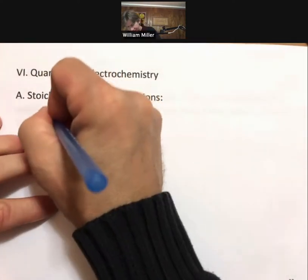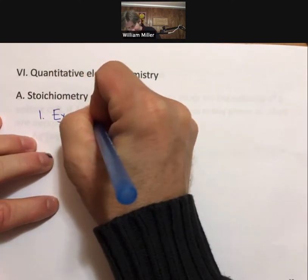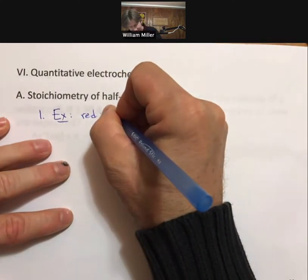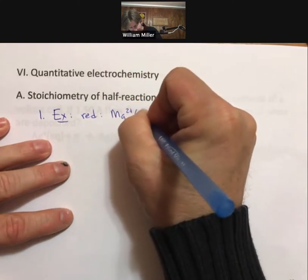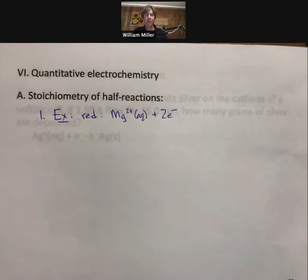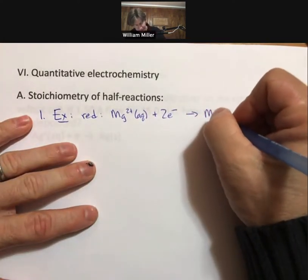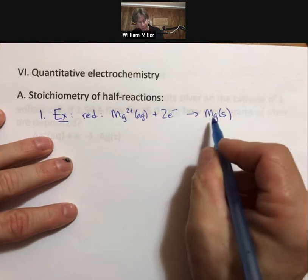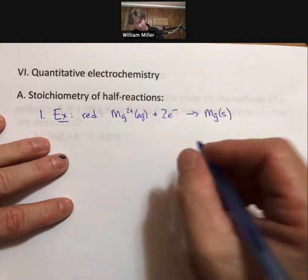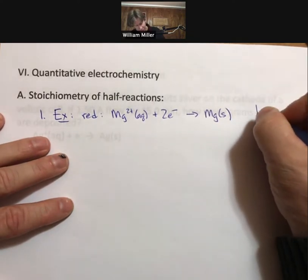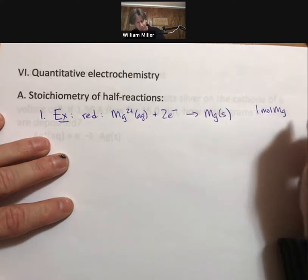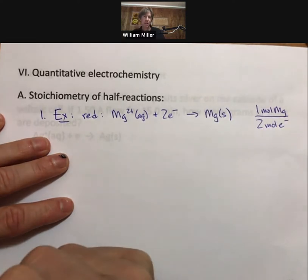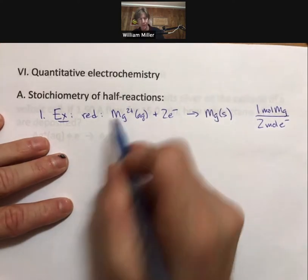For example, if I look at a reduction half reaction for magnesium, it would start with magnesium two plus ions, plus two electrons going to magnesium solid. We could write a stoichiometry relationship between any of these, including the electrons. For every one mole of magnesium or magnesium ion, we need two moles of electrons to make it, produce it, or to react it away.